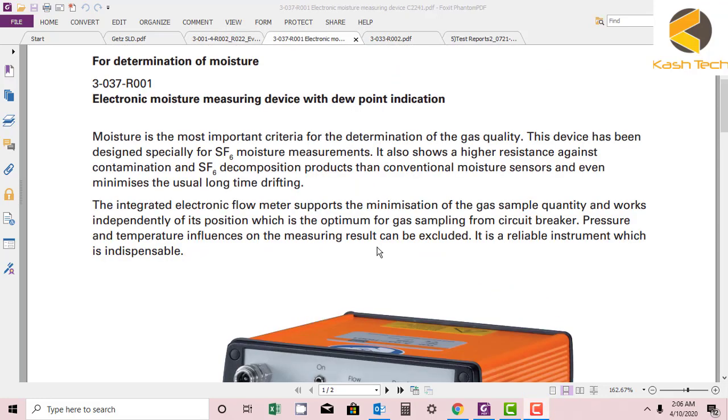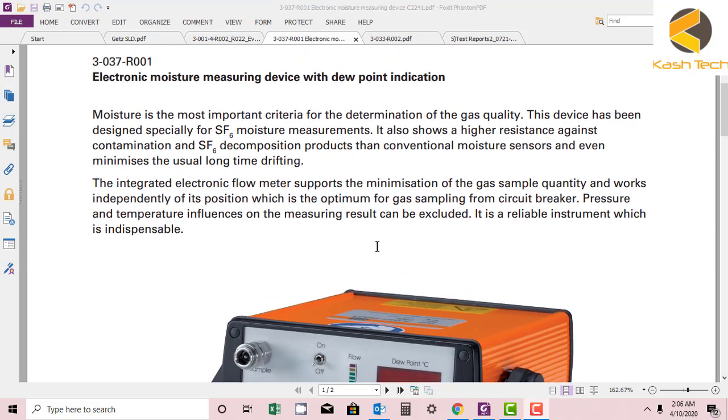Hey guys, now we will discuss another equipment which is called a dew point indicator or monitor. What is dew point? Basically, dew point is dealing with something like moisture. Moisture is the most important criteria for determination of gas quality.